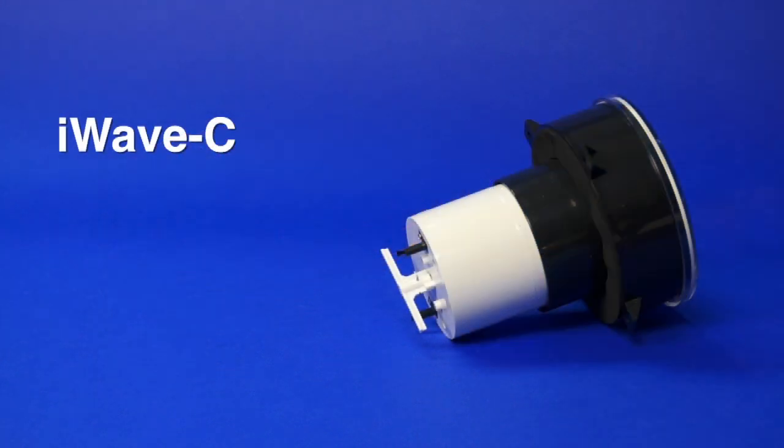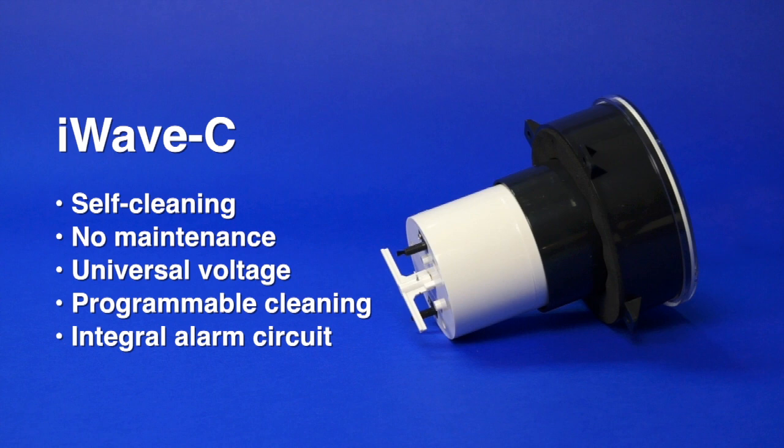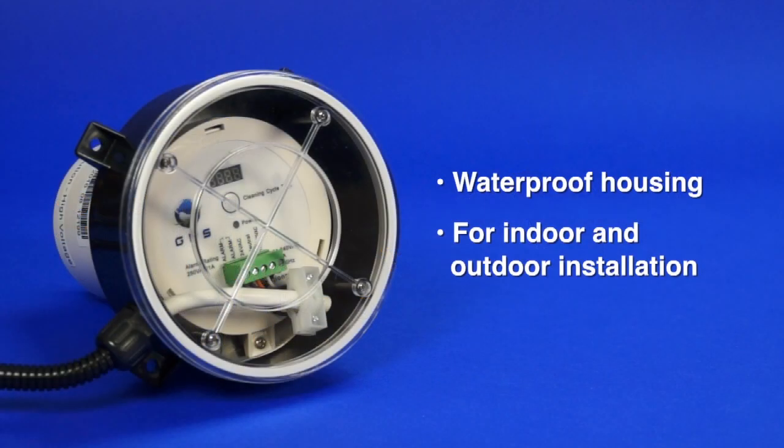For commercial and residential applications, the iWave C is a self-cleaning, no-maintenance air purifier with universal voltage, programmable cleaning, and an integral alarm circuit. The iWave C is suitable for 12-ton systems, and multiple units can be applied to larger systems.